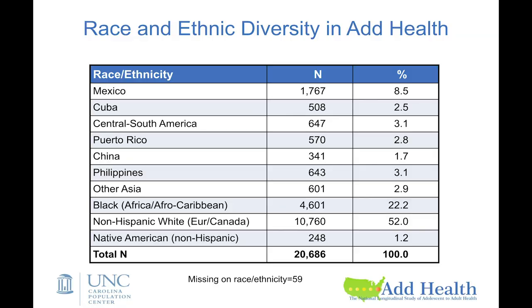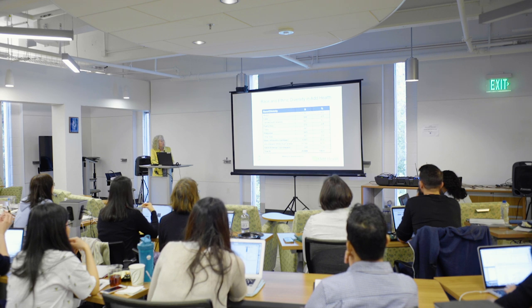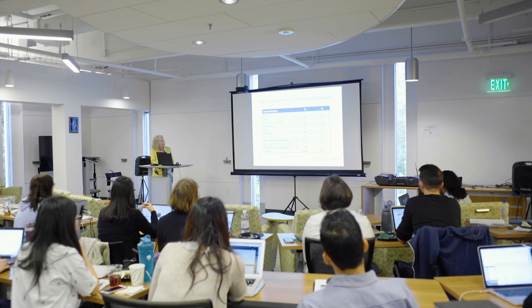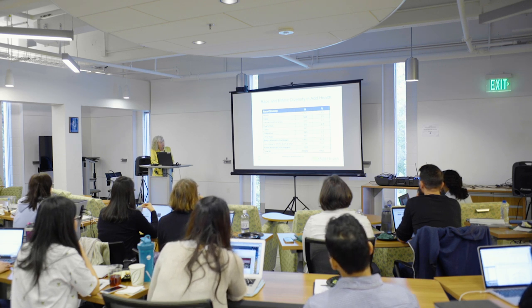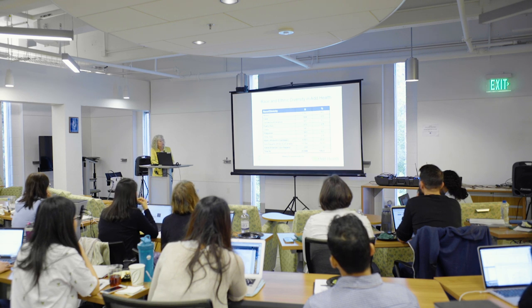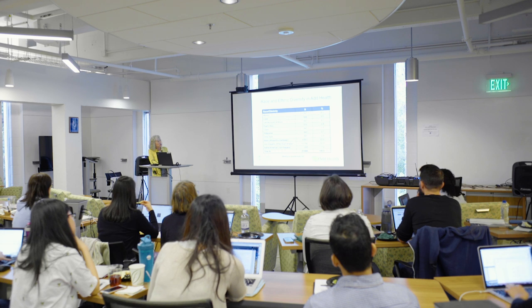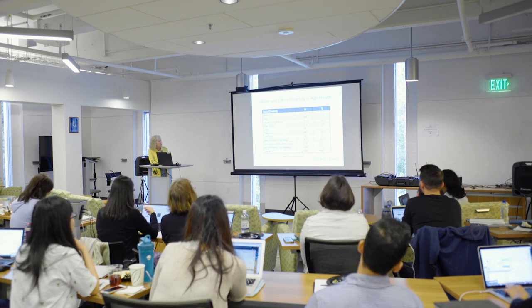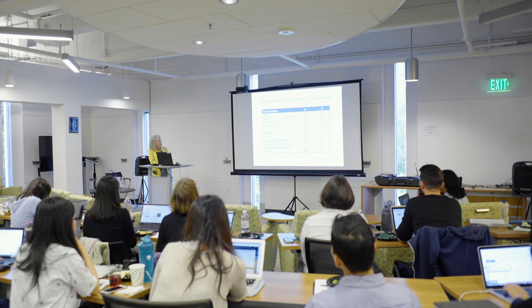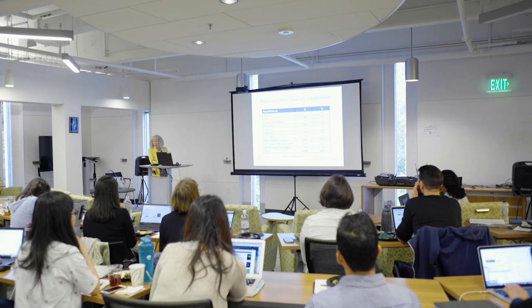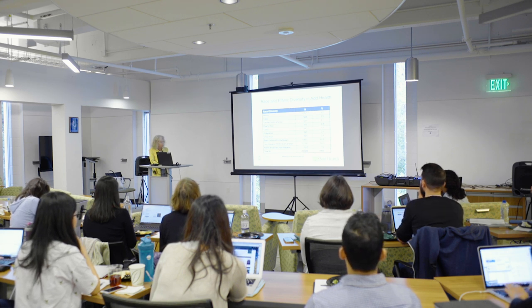Because we over-sampled certain ethnic groups, we end up with tremendous diversity. Looking at wave one, there are nine different race and ethnic groups. These are the sample sizes and the weighted percentages — what their percentages really were in the population around 1995. There are sufficient numbers from Chinese (341), Puerto Rican, Cuban, and so on, and these can even be broken down by immigrant generation.